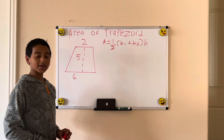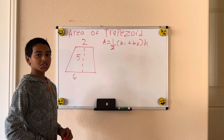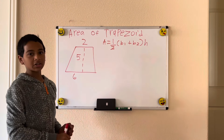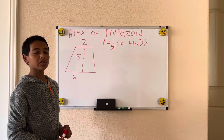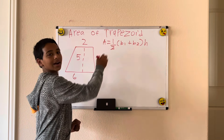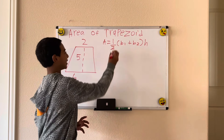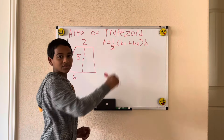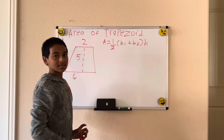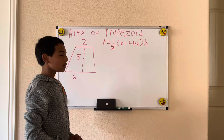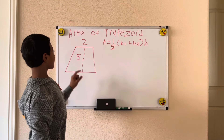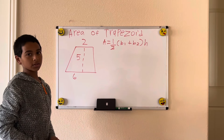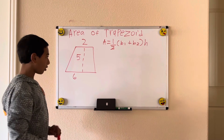Welcome back to my channel. Today we're going to find the area of a trapezoid. We use the formula one-half times base 1 plus base 2 times the height. Let's plug in 2, 5, and 6 into the formula and solve.